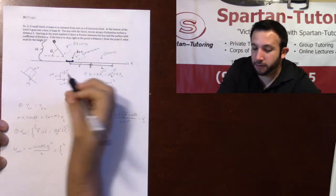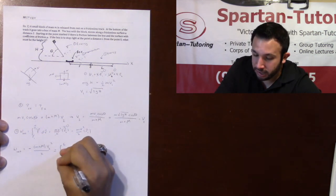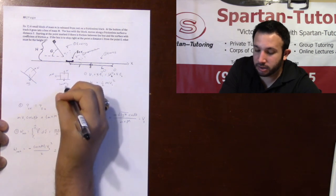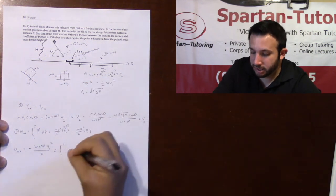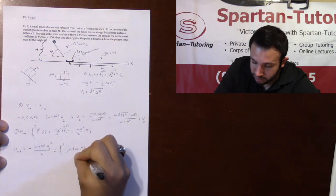And my friction is pointed in the negative direction of my axis. So it will be a negative mu. And obviously with this, your N is just your combined masses times G. So it will be little m plus capital M times G.